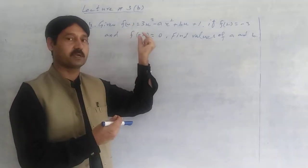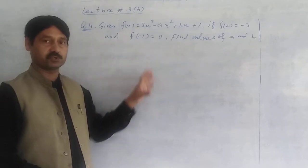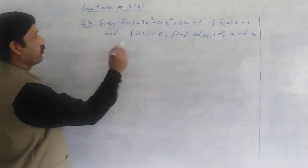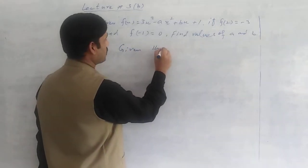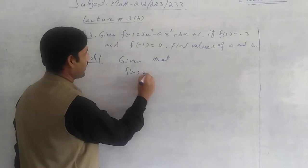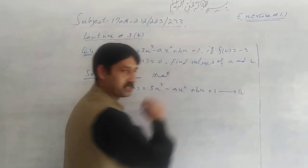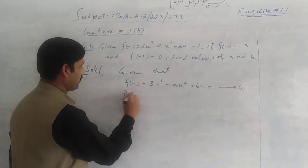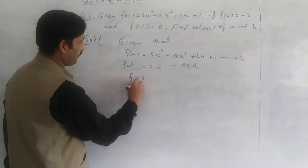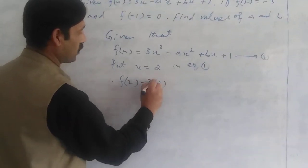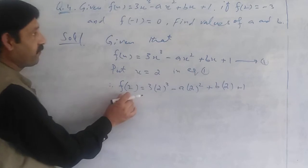First, we put the value of x equals 2, then we put the value of f of minus 1. Given that the function f of x equals 3x cube minus ax square plus bx plus 1. Now we have x equals 2 in equation number 1. Therefore, f of 2 equals 3 into 2 cube minus a into 2 square plus b into 2 plus 1. Now f of 2 value is minus 3.